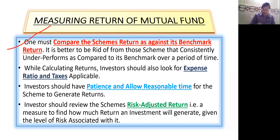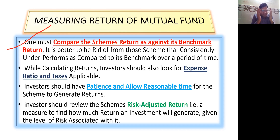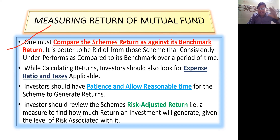It is better to get rid of schemes that consistently underperform compared to their benchmark over a period of time. Remember — there is a huge difference between consistently underperforming and temporarily underperforming. A scheme may temporarily dip and then bounce back. But if it is consistently underperforming, exit that scheme.